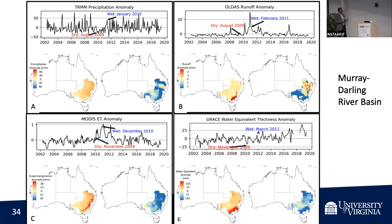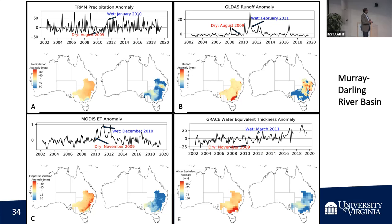And the same is the case with the Murray-Darling Basin, where you see dry 2009 — you just saw Murray-Darling anyway — and then wet January 2010, and you can see the same things occur.